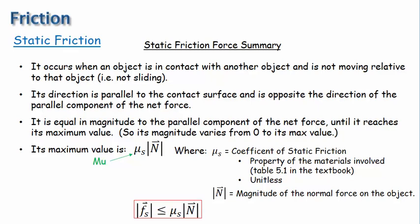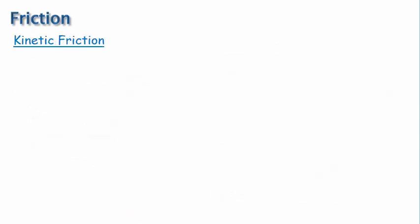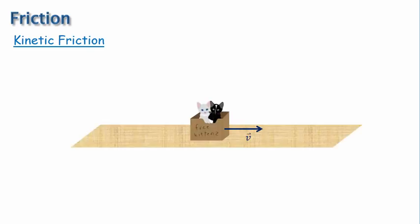Now let's move on to kinetic friction. Recall that kinetic friction is when the objects are moving with respect to each other — in other words, they're sliding against each other. Let's investigate the general behavior of kinetic friction by considering a box of kittens sliding across the floor. The velocity of the box with respect to the floor is shown. Here are the gravitational force and the normal force, and since the box is sliding to the right, there will be a kinetic friction force in the opposite direction. What happens if the box is sliding faster? It actually doesn't increase as a general rule — no matter how fast the object is sliding, the kinetic friction force is constant.